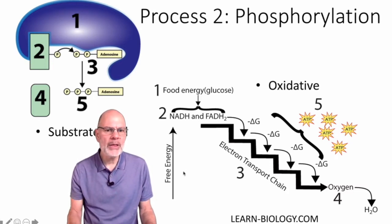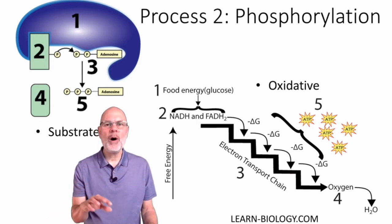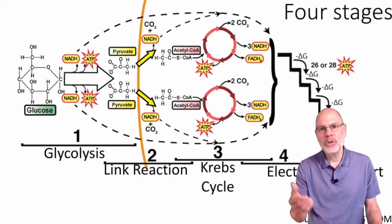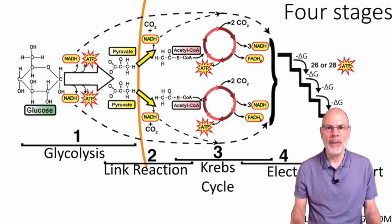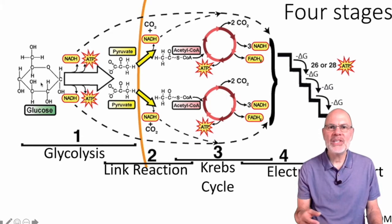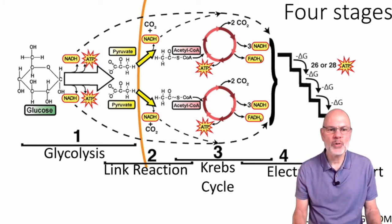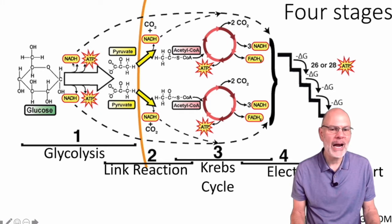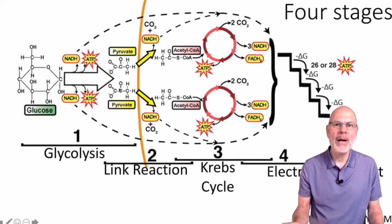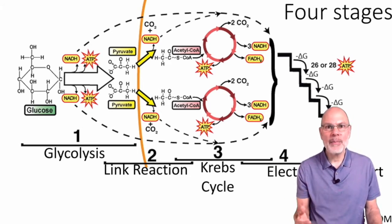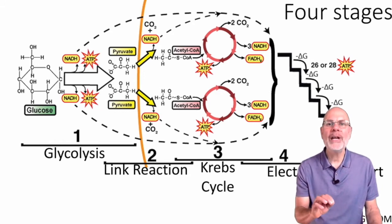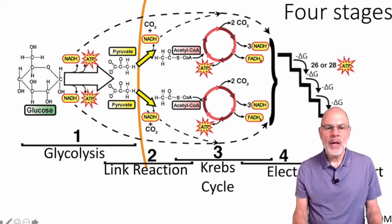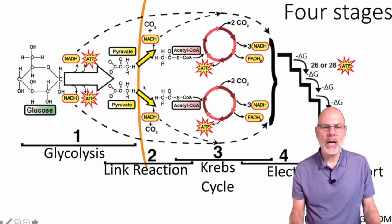Substrate-level phosphorylations happen in two of the four phases of cellular respiration: glycolysis and the Krebs cycle. Glycolysis is the initial stage — it happens in the cytoplasm. It takes glucose, creates some NADH and ATP, and the end product is pyruvate, also known as pyruvic acid. It's an organic molecule that still has a lot of chemical energy. We're going to bring it into the mitochondria through what's called the link reaction.